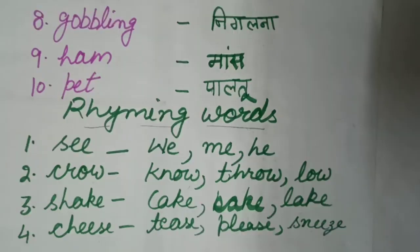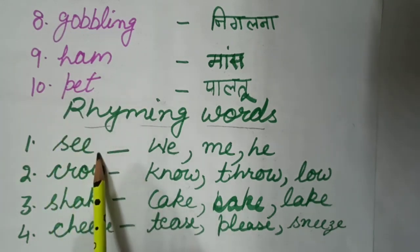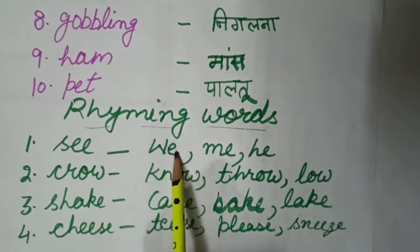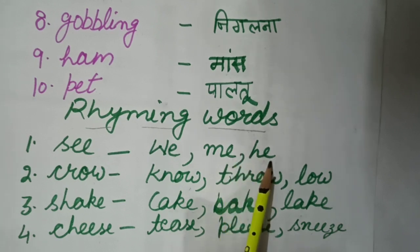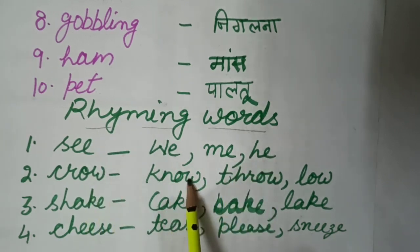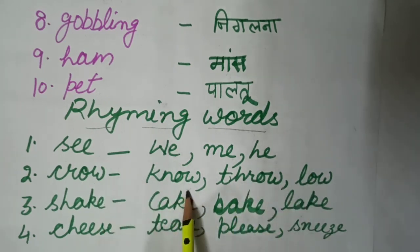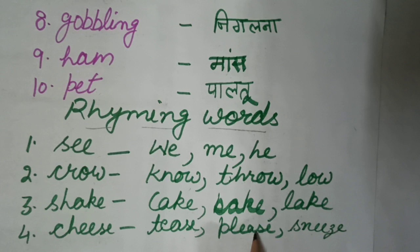Now we will proceed to rhyming words. Rhyming words are words that have the same sound when spoken, and the spelling should also be correct. The rhyming words are: See, Me, He — Crow, No, Throw, Low — Shake, Cake, Bake, Lake — Cheese, Tease, Please, Sneeze.